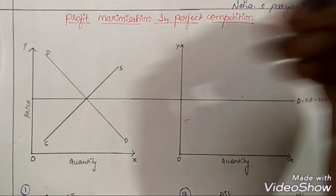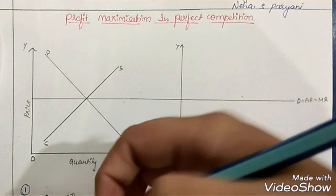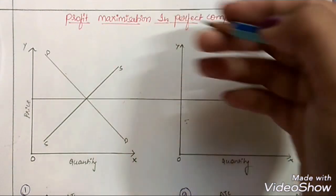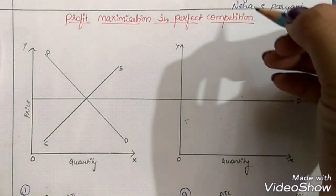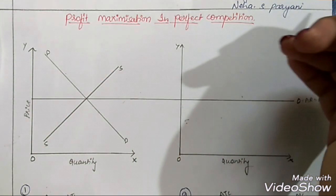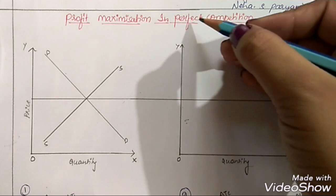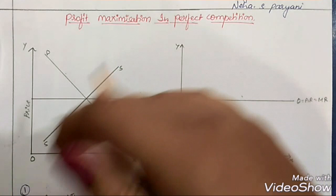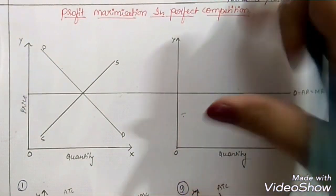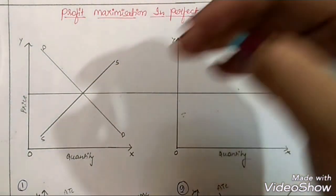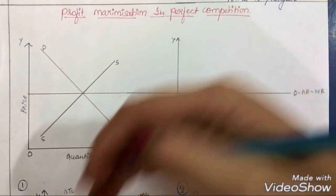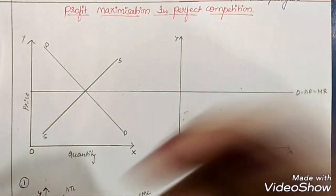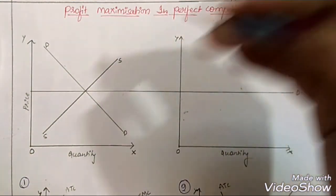Let's quickly revise. Perfect competition market is also known as pure competition market. In this type of market there will be many sellers and many buyers, and the products sold here are of homogeneous nature. The firms in the perfect competition market are price takers — they are not price makers. The price decided by the industry will prevail in the market, and all firms have to charge the same price.